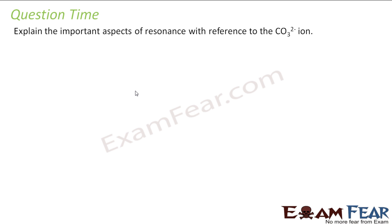So let's start with this. I have carbon, 4 electrons, oxygen, 6 into 3 plus 2 negative charge. Total I have 24 electrons, valence electrons.